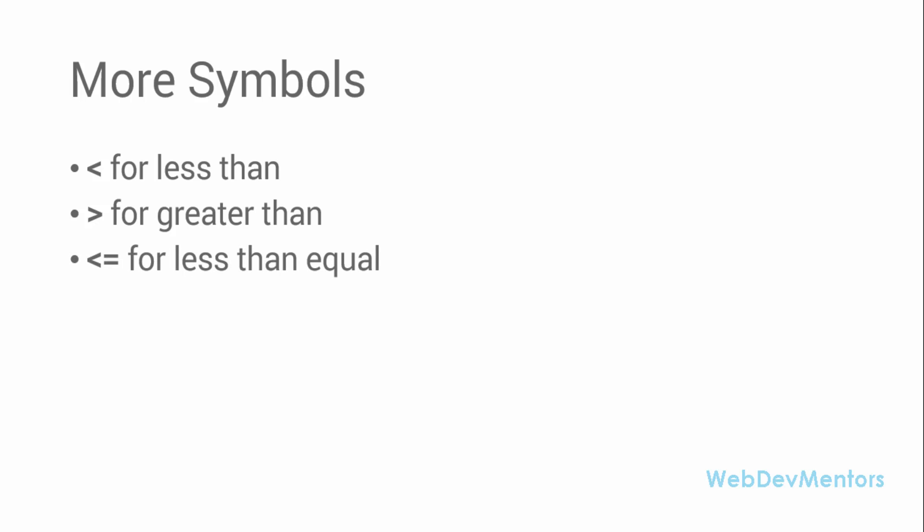Less than or equal to will find whether the number on the left is either less than or equal to the number on the right side. And greater than or equal to will check if the number on the left side is either greater than or equal to the number on the right side.